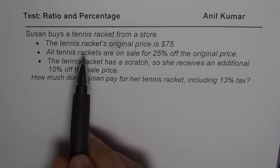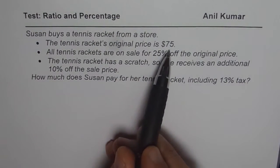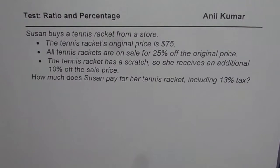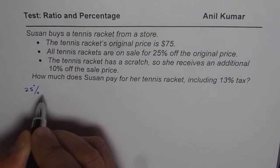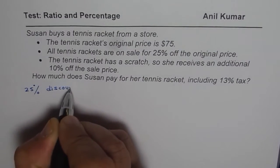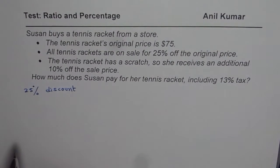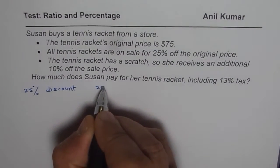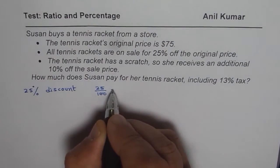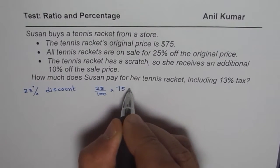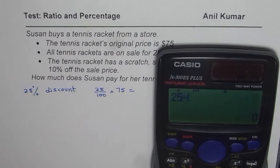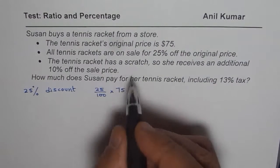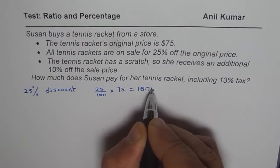The standard way of doing this: we know the original price is $75. Let us first find the discount on this price. The discount is 25%, so we write 25% discount. What does it mean? It means on $75 you're going to get 25% discount. That means 25% = 25/100 times 75. So we calculate: 25 divided by 100 times 75, which equals 18.75. So $18.75 is the discount.